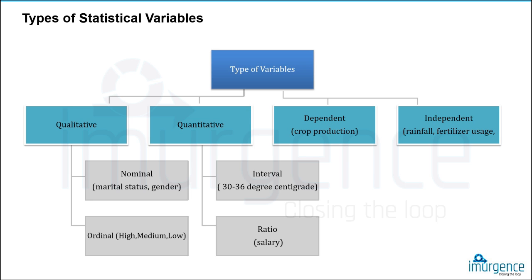Within categorical variables, you have three forms: binary, nominal, and ordinal. Binary variables take only two forms — zero and one, true/false, yes/no, male/female. Nominal variables have more than two levels in the data, such as marital status — married, unmarried, separated, divorced — with no sequence of importance between the levels.